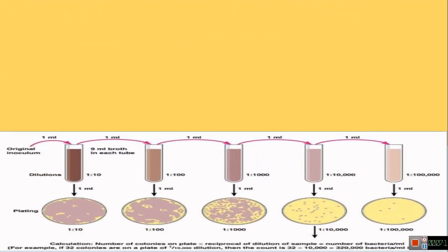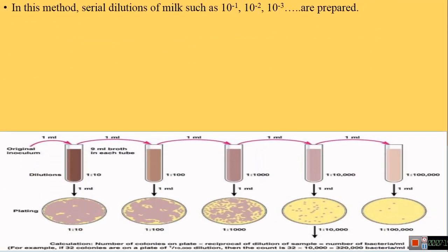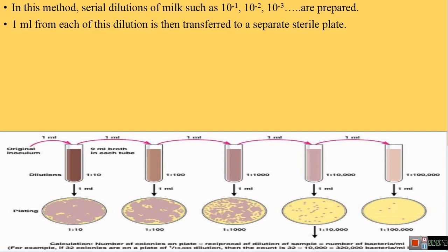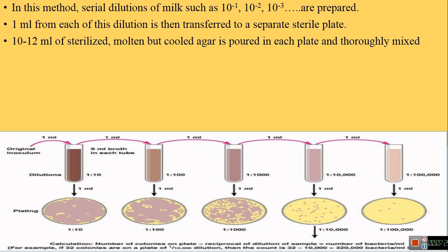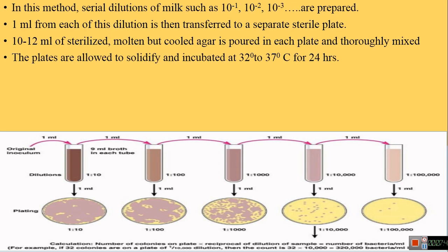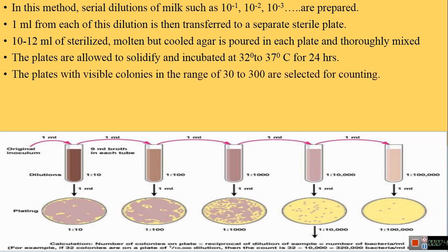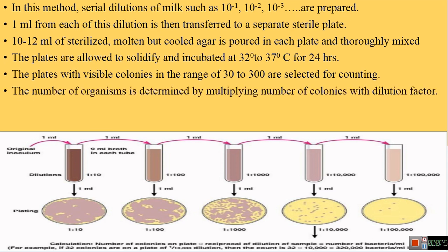In this method, serial dilutions of a milk sample such as 10⁻¹, 10⁻², 10⁻³, and so on are prepared. One ml from each dilution is transferred to a separate sterile plate. An appropriate amount — 10 to 12 ml — of sterilized molten and cooled agar medium is poured into each plate and thoroughly mixed with the inoculum by rotating the plate. Plates are allowed to solidify and incubated at 30–37°C for 24 hours. Plates with colonies in the range of 30–300 are selected for counting, and the number of organisms is determined by multiplying colony count by the dilution factor.